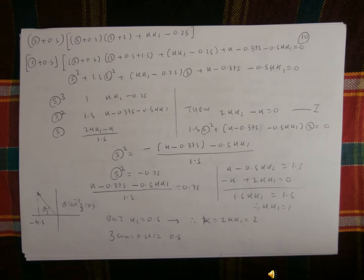Therefore, we continue to solve that problem. So that will be (x + 0.5)(x + 0.5)(x + 2) + kk1 minus 0.25. Therefore, (x + 0.5)(x + 0.5)(x + 0.5) + kk1 minus 0.25 + k minus 0.375 minus 0.5·kk1 equal to 0. So that equation you multiply.